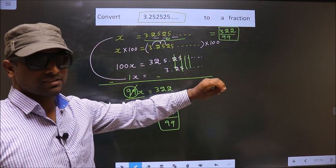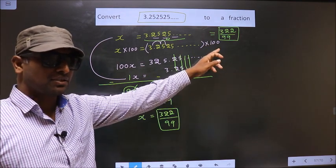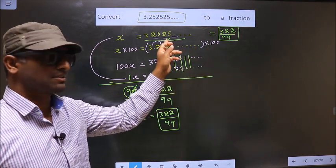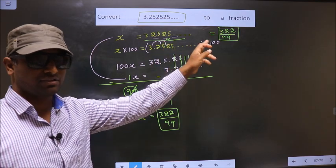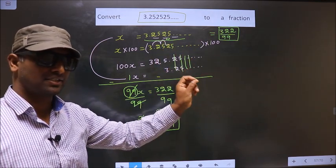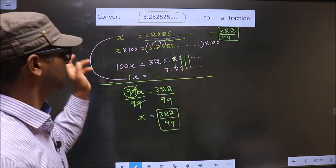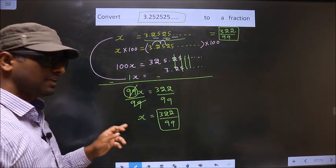To confirm this answer, put this in the calculator. You should get this recurring decimal. If you get it, your fraction is correct, otherwise not. Am I clear?